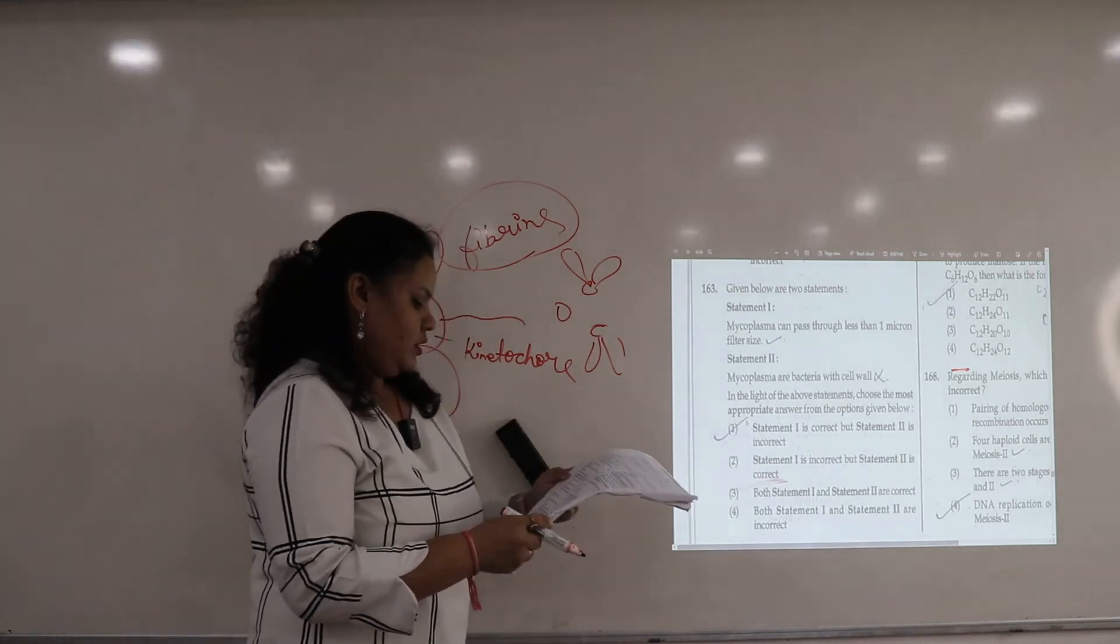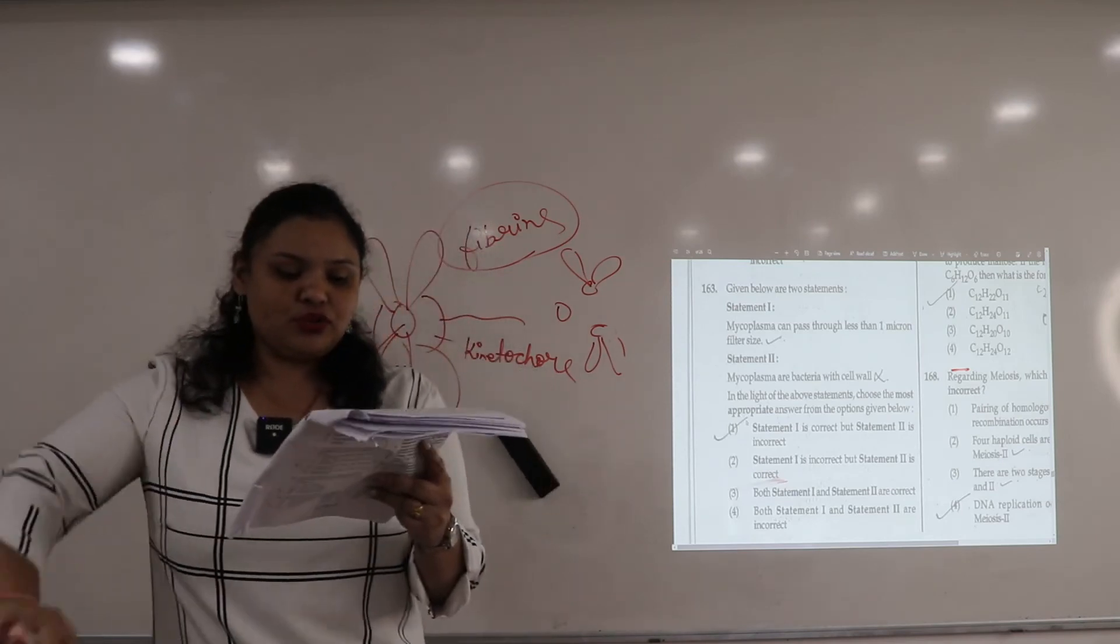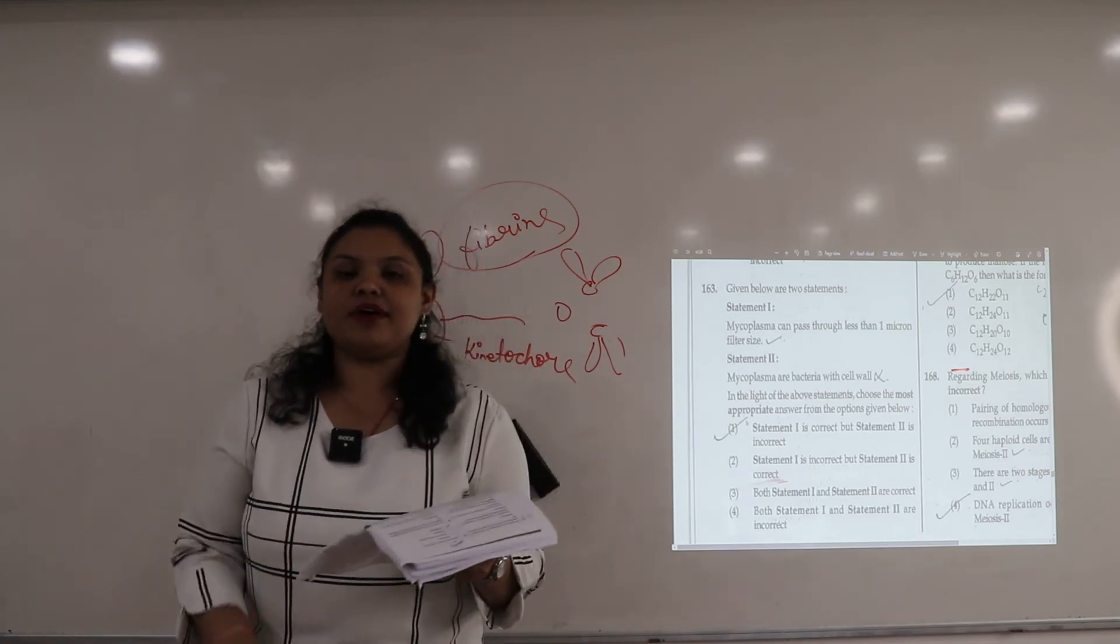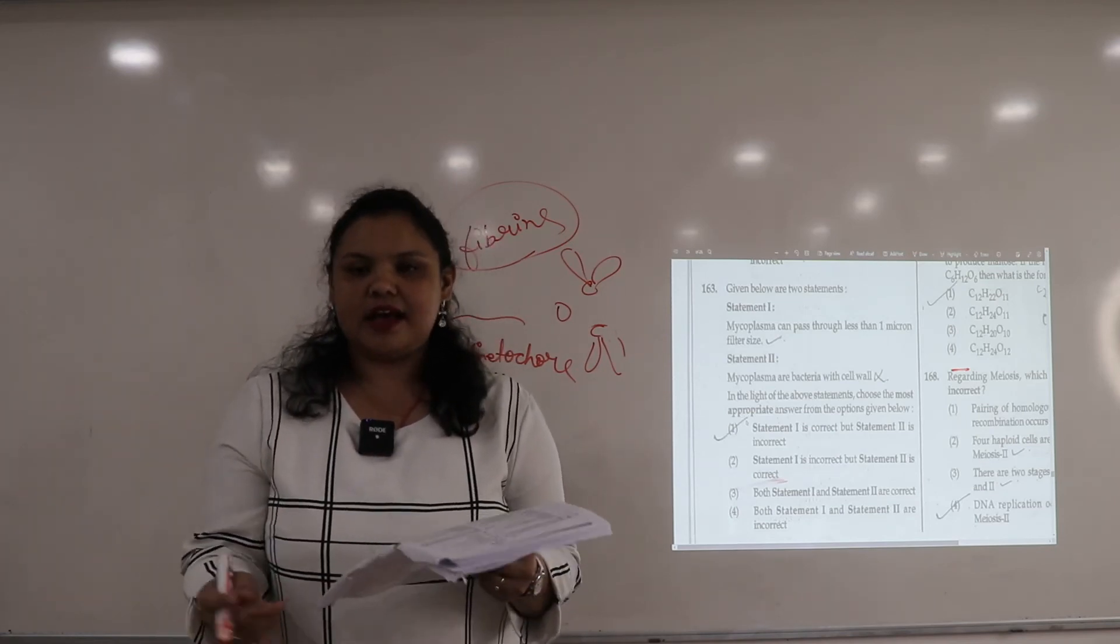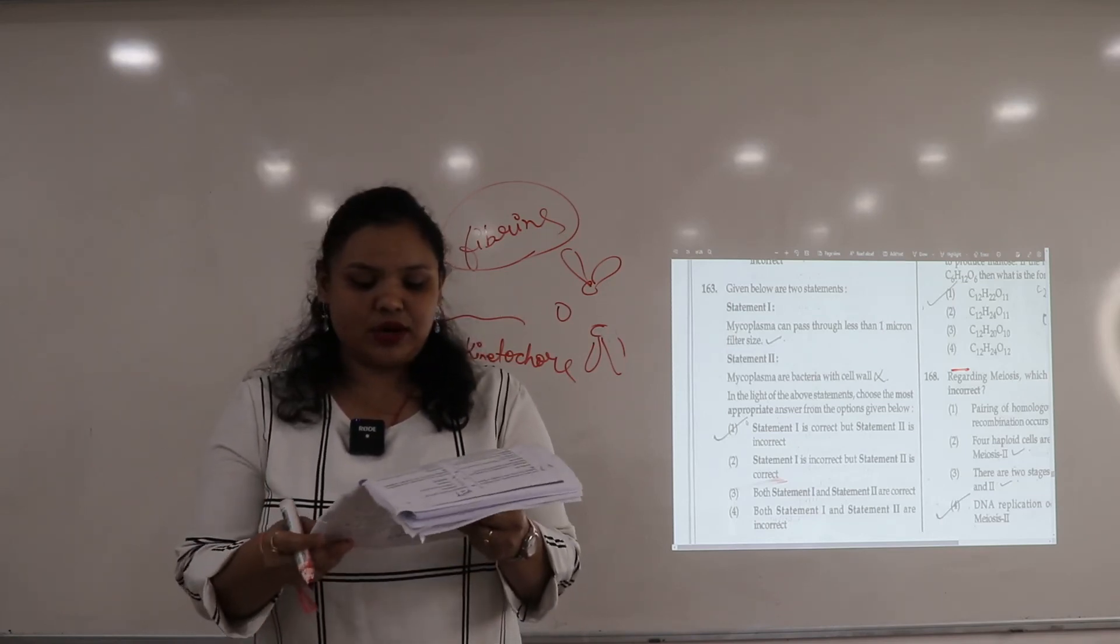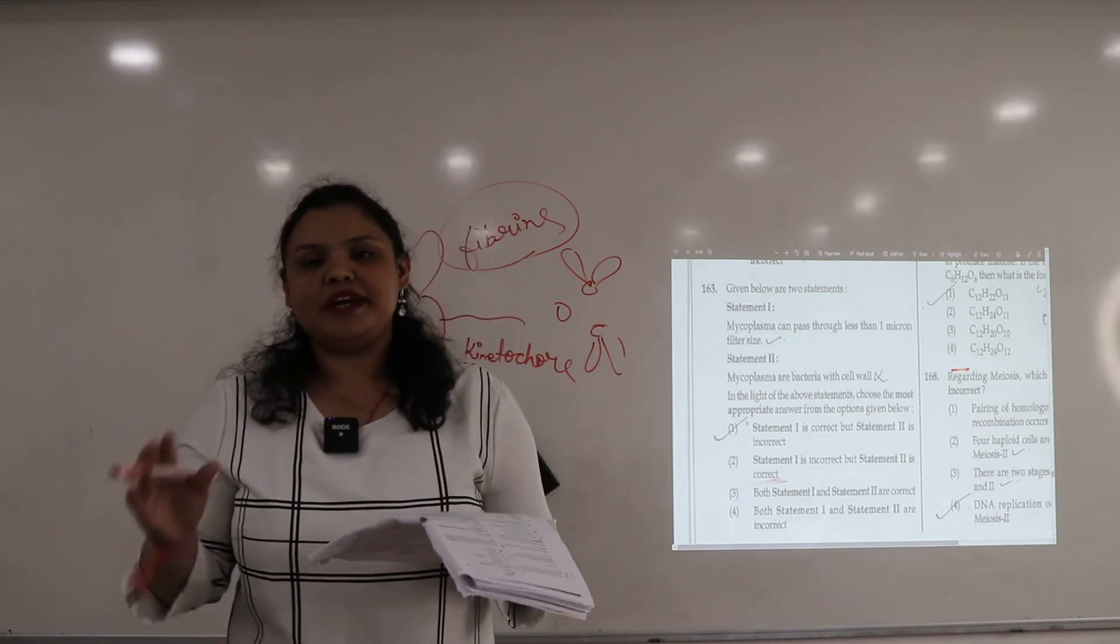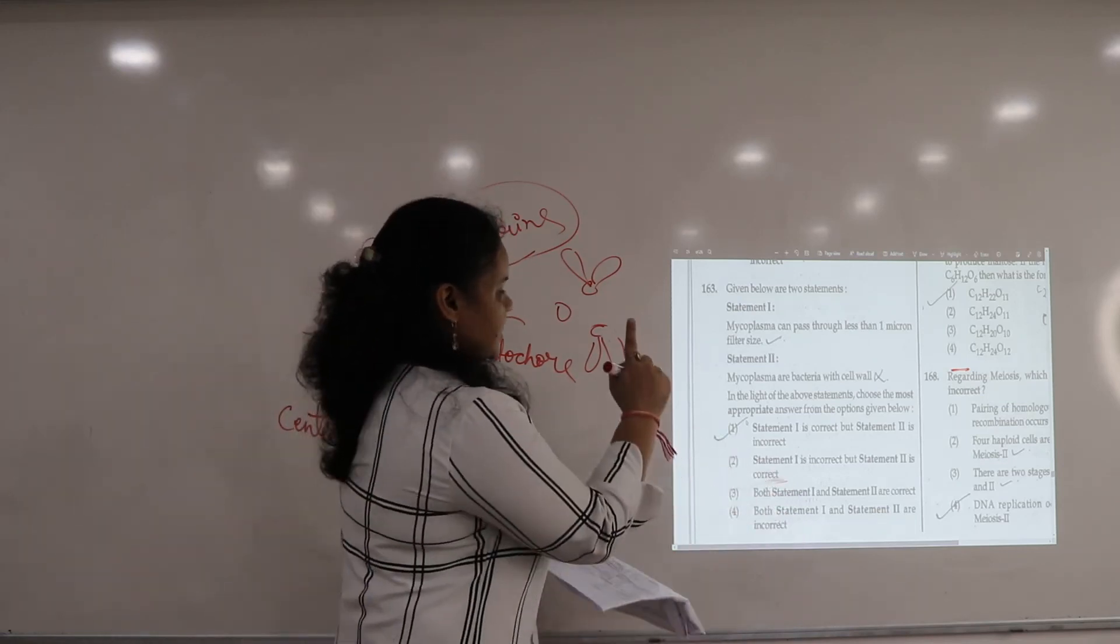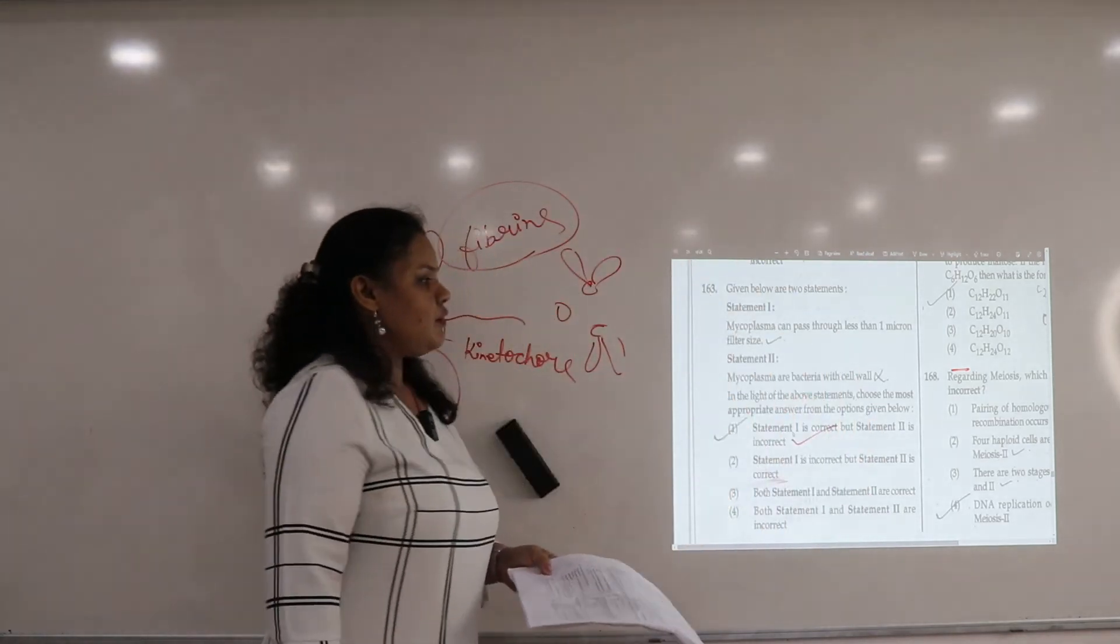Question number 163. Again, statement question. He says mycoplasma can pass through less than 1 micron filter size. It is the smallest cell among all prokaryotes. Mycoplasma galisepticum, you all know. And statement 2 is: mycoplasma bacteria with cell wall. It is not cell wall. So its answer will be: statement 1 is correct, but the statement 2 is incorrect. The right answer is first.